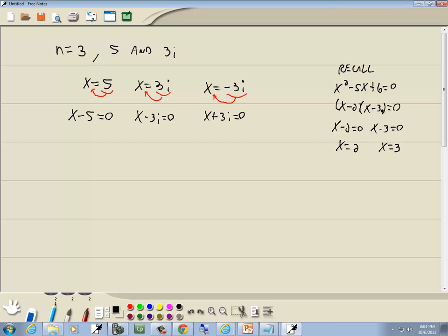Now if I were to go from this step to this step, it looks like I put parentheses around and put them next to each other. Well, that's what we'll do. We've got x minus 5 times x minus 3i times x plus 3i.